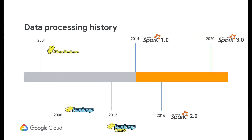We can then fast forward to 2014, where Matei Zaharia founded Spark and the company Databricks was created for this technology. Spark came to be based on the fact that it was basically an improvement on the Hadoop and MapReduce paradigm — Spark focuses on in-memory processing. You essentially load all of your data into memory, do the processing, then write it back.